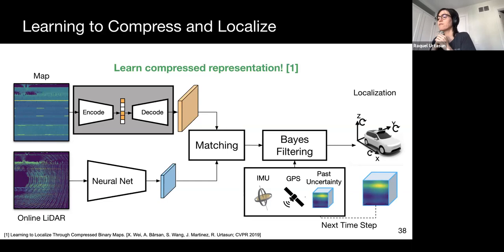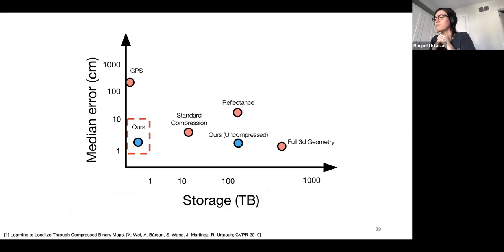So overall, in this work, we use learning to get robust and compact feature representations. And we use model-based knowledge to formulate the problem and integrate prior into the Bayesian filter. This technique is extremely robust to any calibration issues and can achieve three-centimeter error with minimal maps.